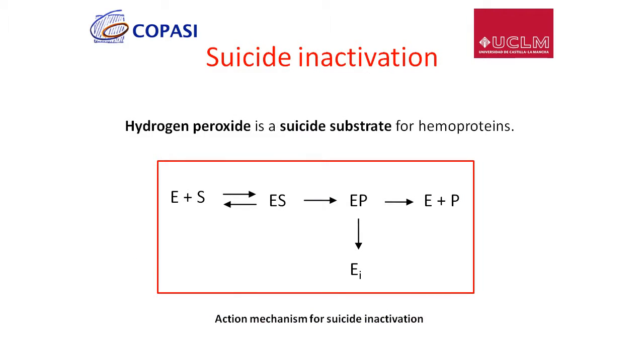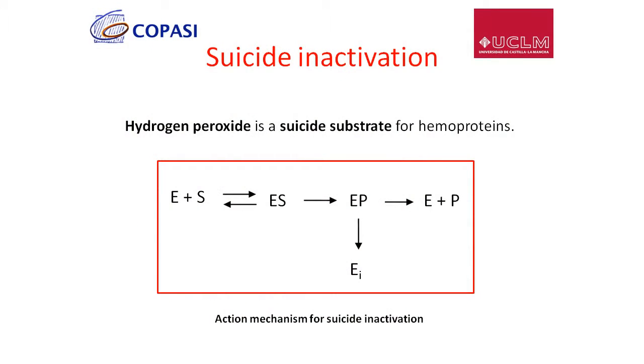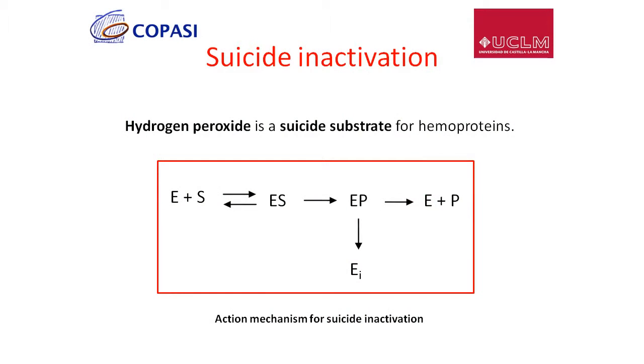Hydrogen peroxide is also a suicide substrate for hemoproteins. This is a very interesting process because hydrogen peroxide is necessary for the reaction as it is the substrate, but at the same time it inactivates the protein. This process is well known in enzymology and is called suicide inactivation. As shown in the slide, the substrate reacts with the enzyme producing enzymatic intermediates that can evolve towards formation of products and inactivation of the protein.